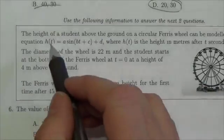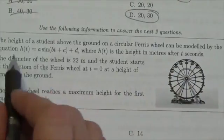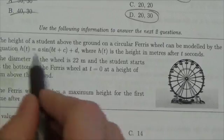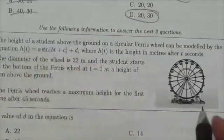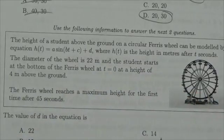So in this question we read that the height of a student above ground on a circular Ferris wheel can be modeled by the equation h(t) = a sin(bt + c) + d. So we're not given any specific information there, just that it's a sinusoidal function where h(t) is the height in meters and t is seconds.